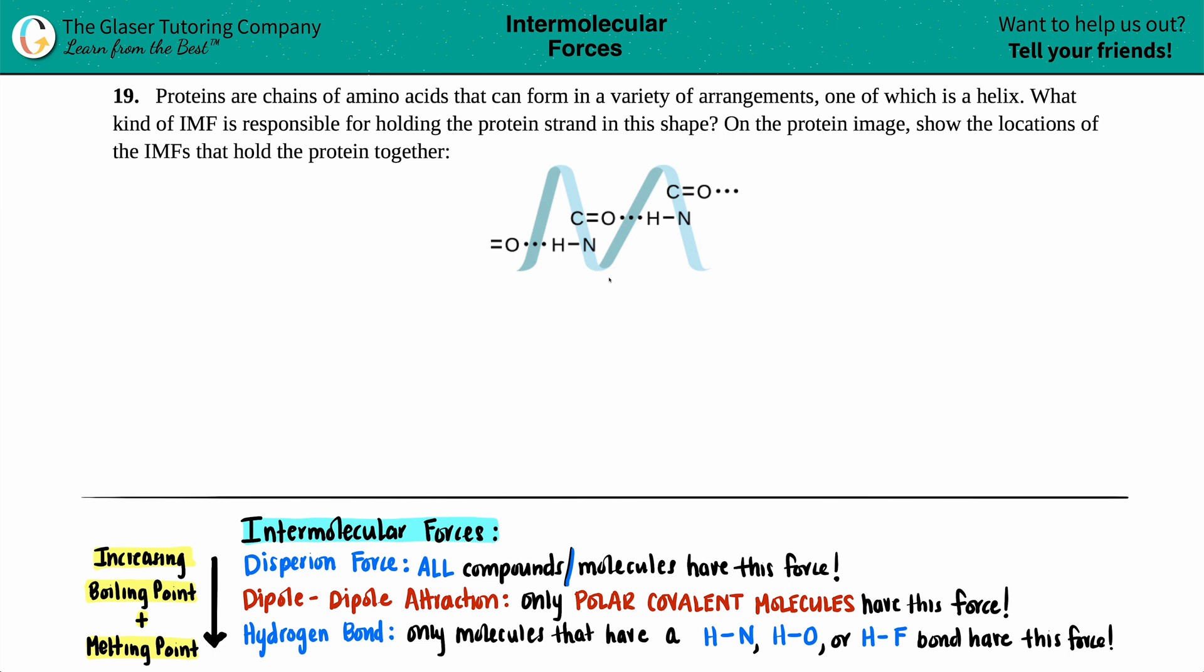Number 19. Proteins are chains of amino acids that can form in a variety of arrangements, one of which is a helix.